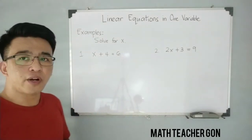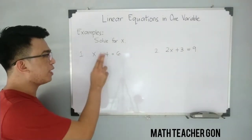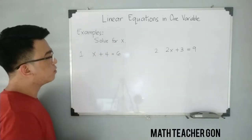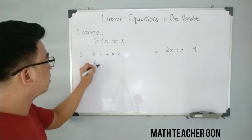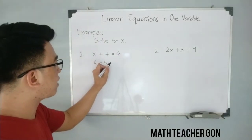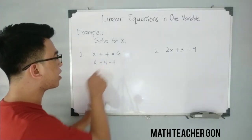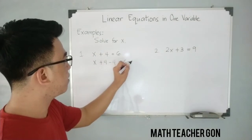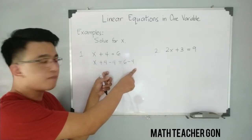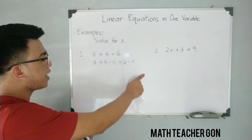The process for solving this: first you need to isolate the variable x. All you need to do is eliminate 4 from the left side of the equation. To eliminate 4 and make it 0, subtract 4 from both sides of the equation. So this becomes x plus 4 minus 4 is equal to 6 minus 4. We have subtracted 4 from both sides to eliminate the constant 4.